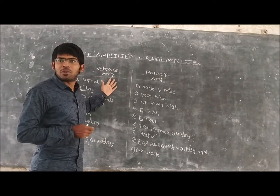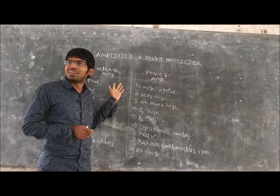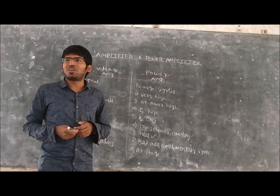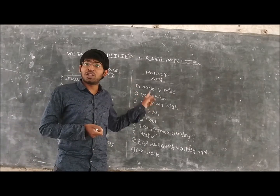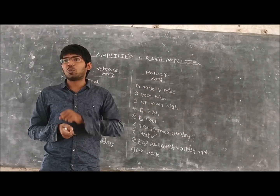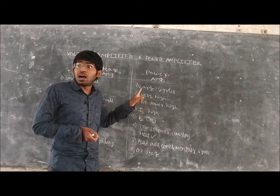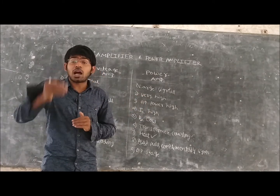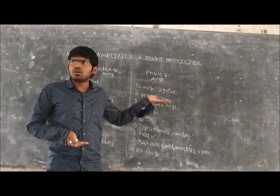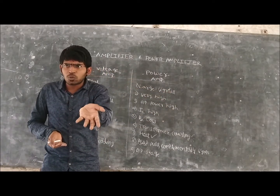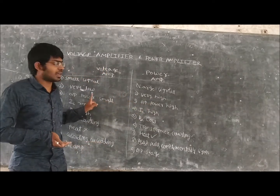At the voltage amplifier, the output power is very small because our requirement is not high output power — we are expecting high voltage. Whereas in the case of the power amplifier, we are expecting high power output. Because the power is high, we are expecting the output current to be high, and we are taking that output current at the collector terminal. So the collector current is high in the power amplifier, whereas the collector current is low in the voltage amplifier.